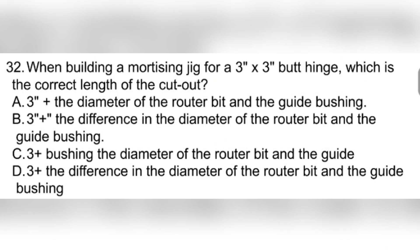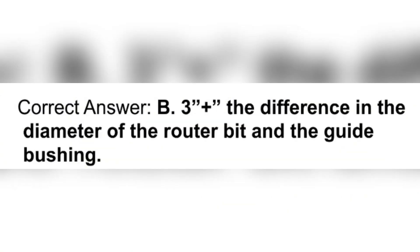Question 32. When building a mortising jig for a 3-inch by 3-inch butt hinge, which is the correct length of the cutout? A. 3 inches plus the diameter of the router bit and the guide bushing. B. 3 plus the difference in the diameter of the router bit and the guide bushing. C. 3 plus the diameter of the router bit and the guide bushing. D. 3 plus the difference in the diameter of the router bit and the guide bushing. Correct answer: B. 3 plus the difference in the diameter of the router bit and the guide bushing.